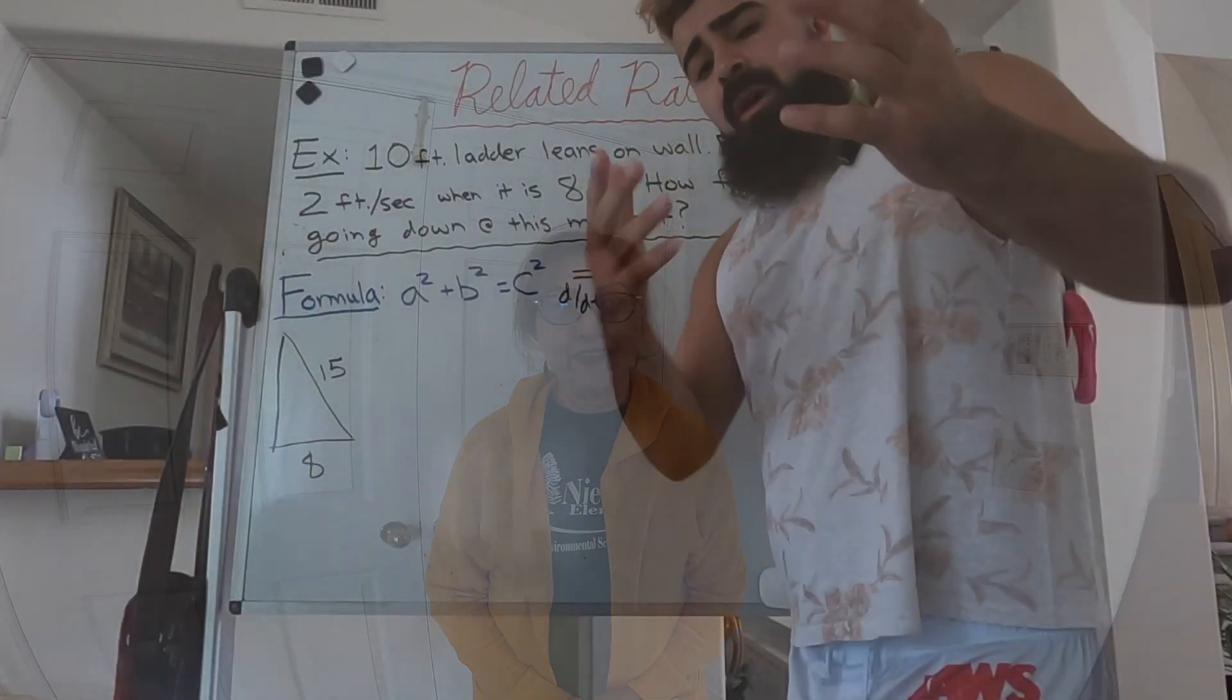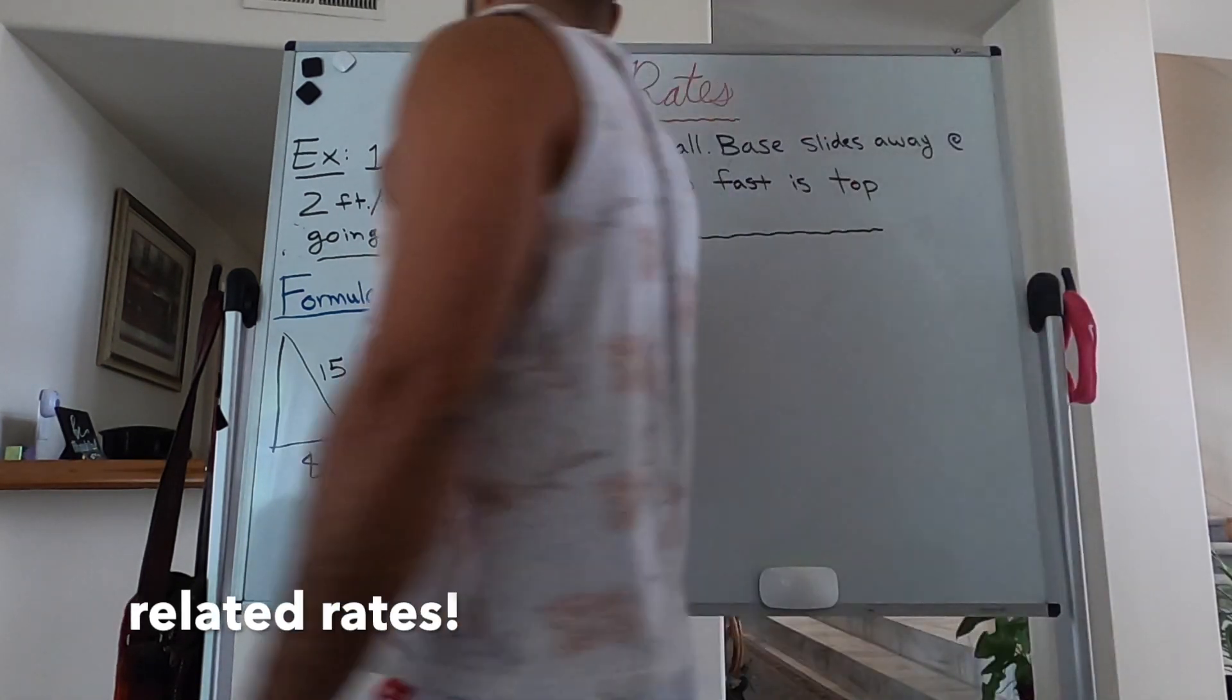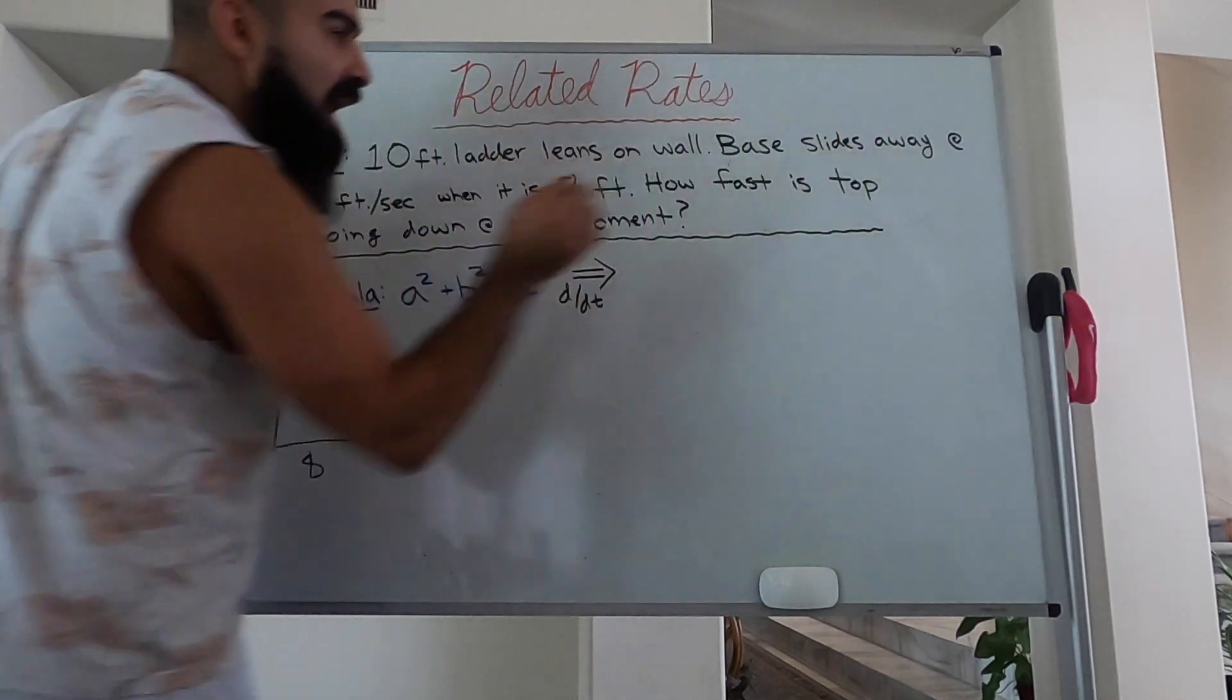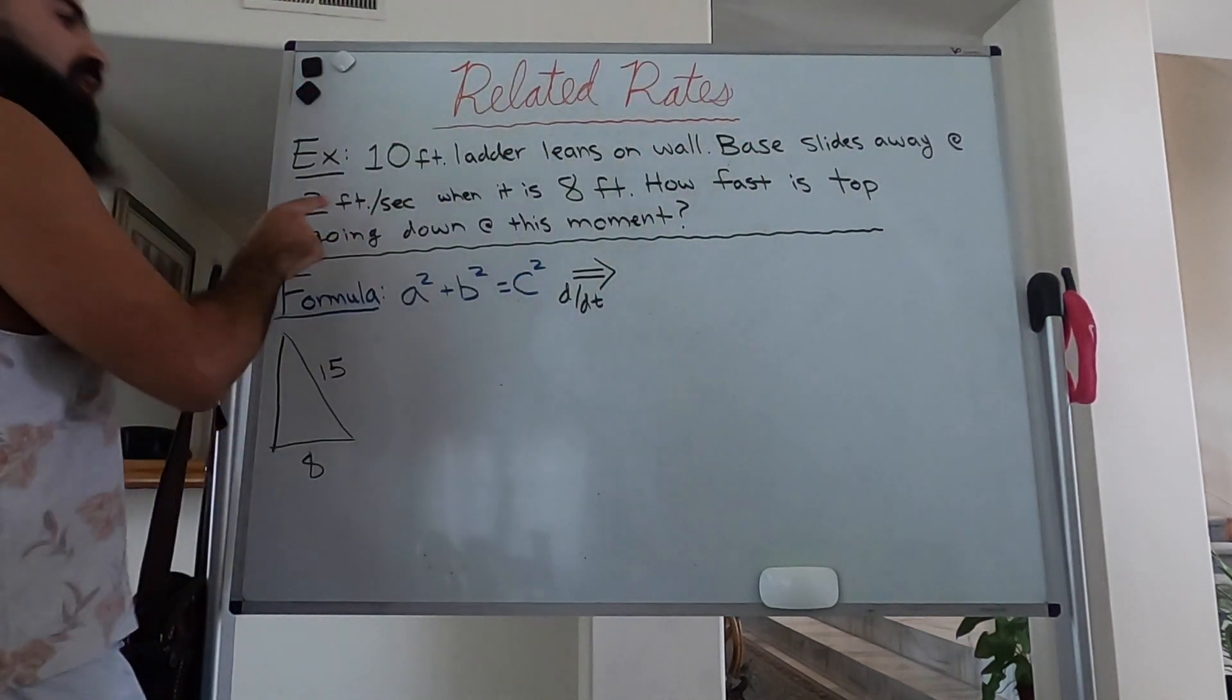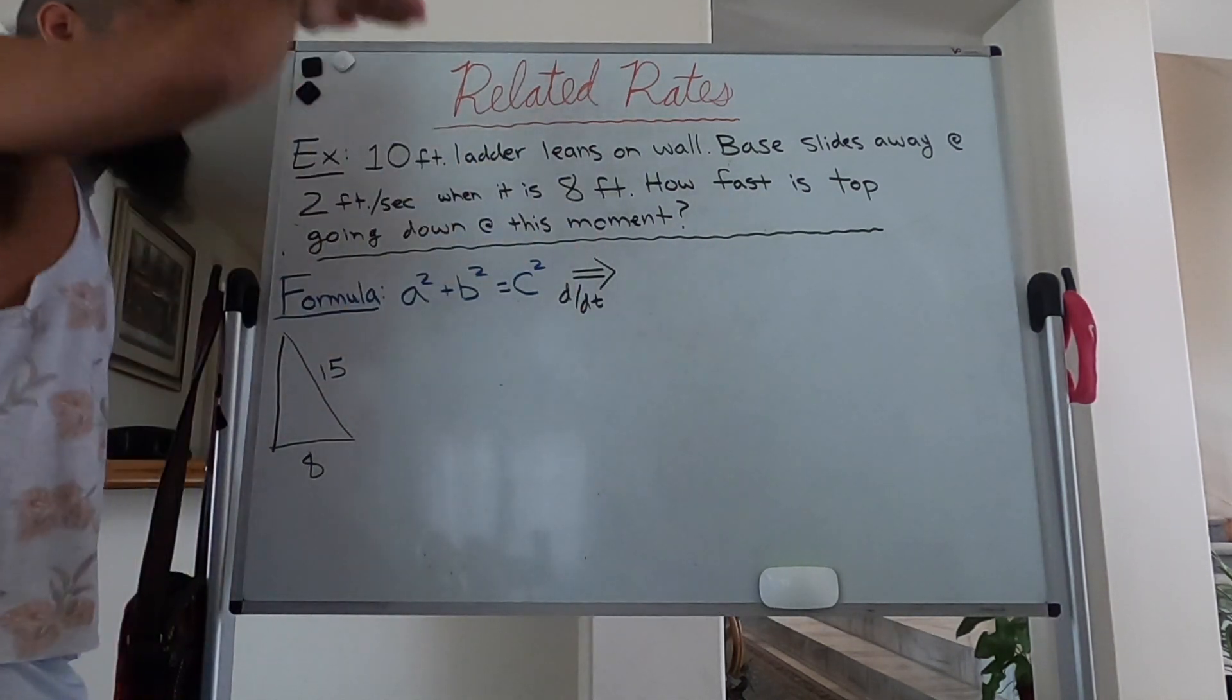Welcome to My Math Your Math. Subscribe if you have not already. Today, a little calculus problem about related rates. You've got a 10-foot ladder that's leaning on a wall. The base is sliding away at a rate of 2 feet per second. When the base is 8 feet, how fast is the top going down at this moment?